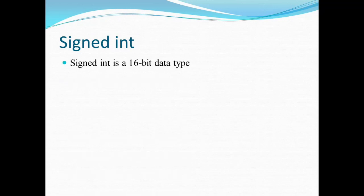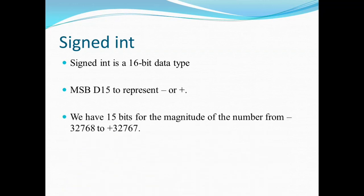The next data type is signed integer. Signed integer is again a 16-bit data type, but as it is signed, the D15th bit is reserved for the sign bit. The magnitude bits will be only D0 to D14, that is total 15 bits are available for magnitude. Therefore, the range will be from -32768 to +32767.